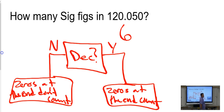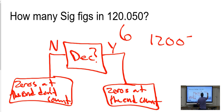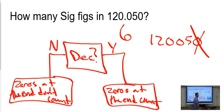Sandwiches always count. So if we get rid of the decimal, this number is 1, 2, 0, 0, 5, 0. This is the only number you wouldn't count as a sig fig. Zeros between two non-zeros always count, even if there's 1,000 of them.